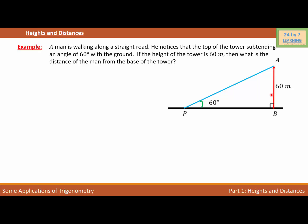If you look at the problem, we have to find the distance between P and B because B is the base of the tower and P is the point where the man is standing. Let the distance between P and B be D.